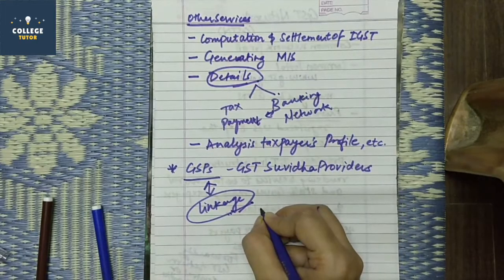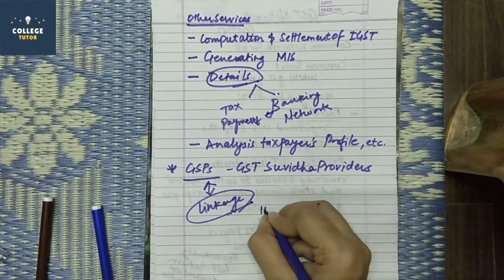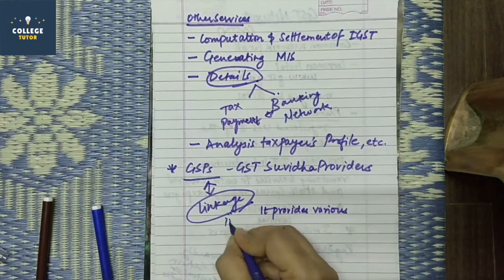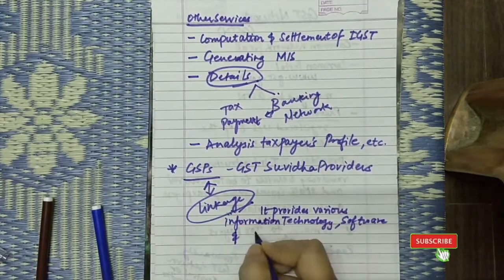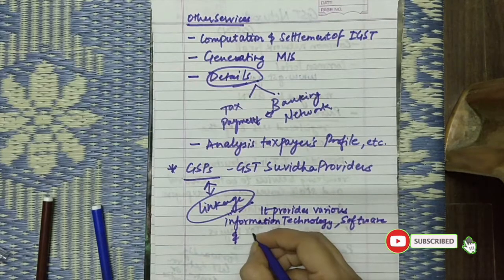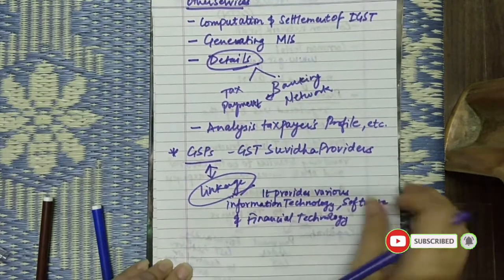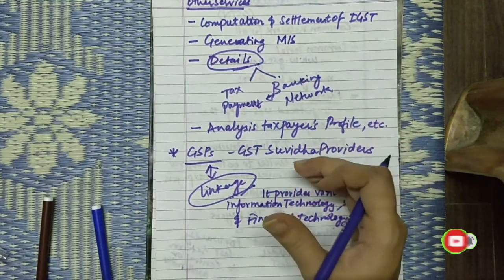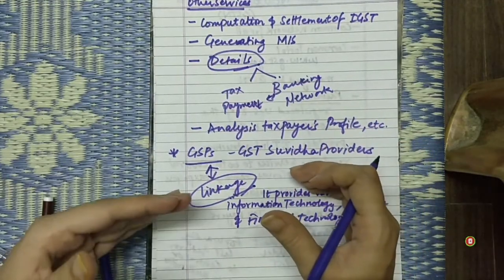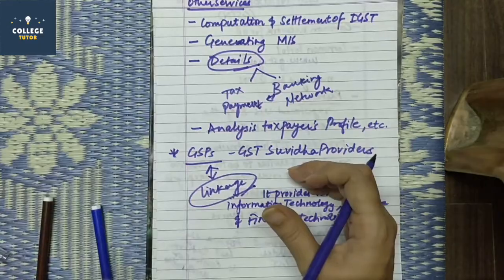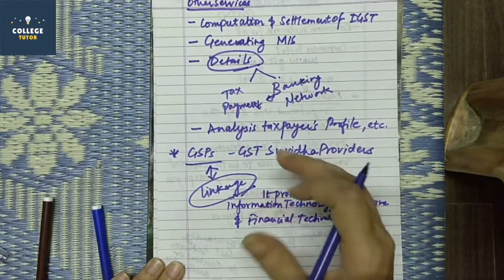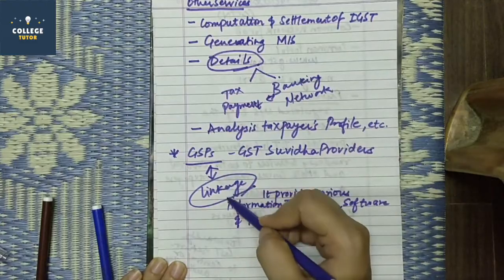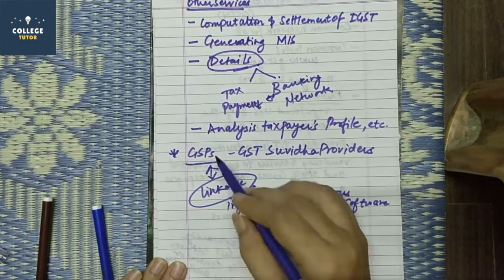GSTN provides various information technology, software, and financial technology services through this network. GSPs are appointed under GSTN. The linkage between GSPs and taxpayers — all of this is part of the GSTN framework.